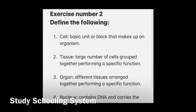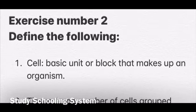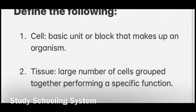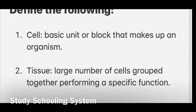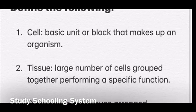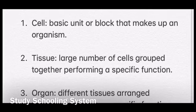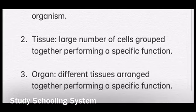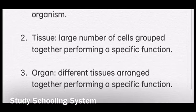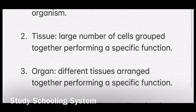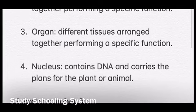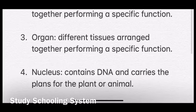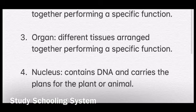The first definition is cell. A cell is a basic unit or block that makes up an organism. The second definition is tissue — tissue is a large number of cells grouped together performing a specific function. The third definition is organ — different tissues arranged together performing a specific function. The fourth definition is nucleus. Nucleus contains DNA and carries the plans for the plant or animal, and it decides what type of cell that specific animal or plant cell will be.